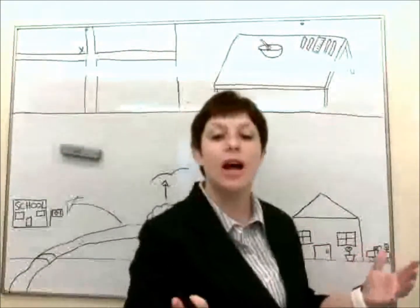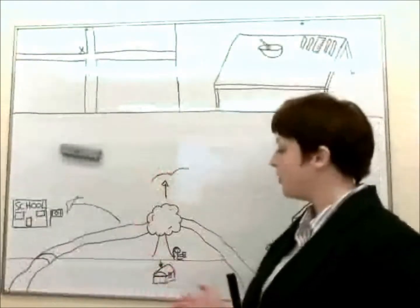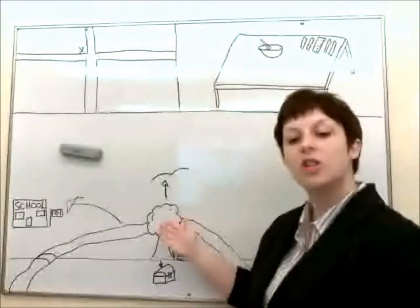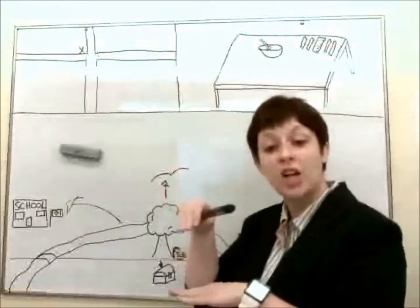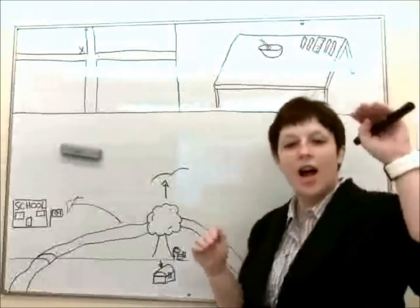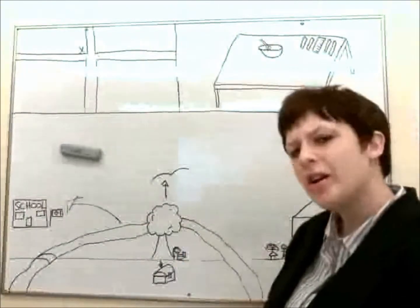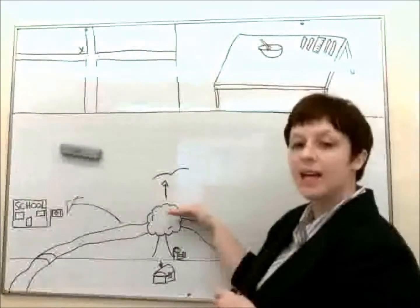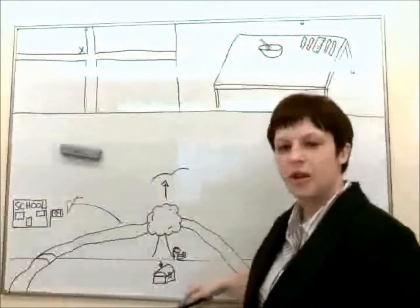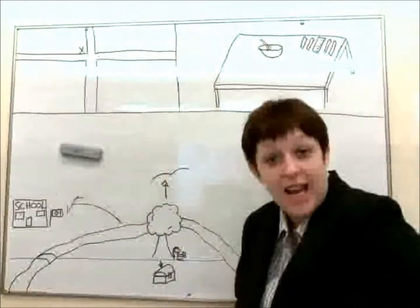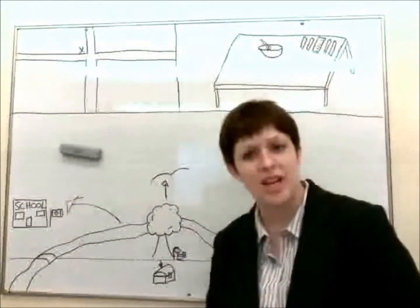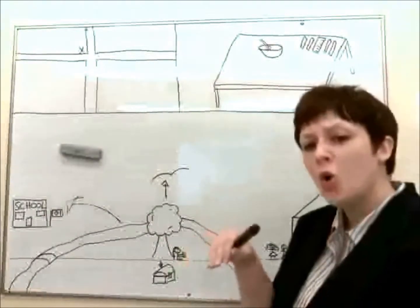Now we keep traveling and we come to a tree. Where is the woman in relation to the tree? She is under the tree. And we have a bird flying. Where is the bird flying? It is flying above the tree. And if we look down, buried underground, we have a treasure chest. Where is the treasure chest? It is below the tree.